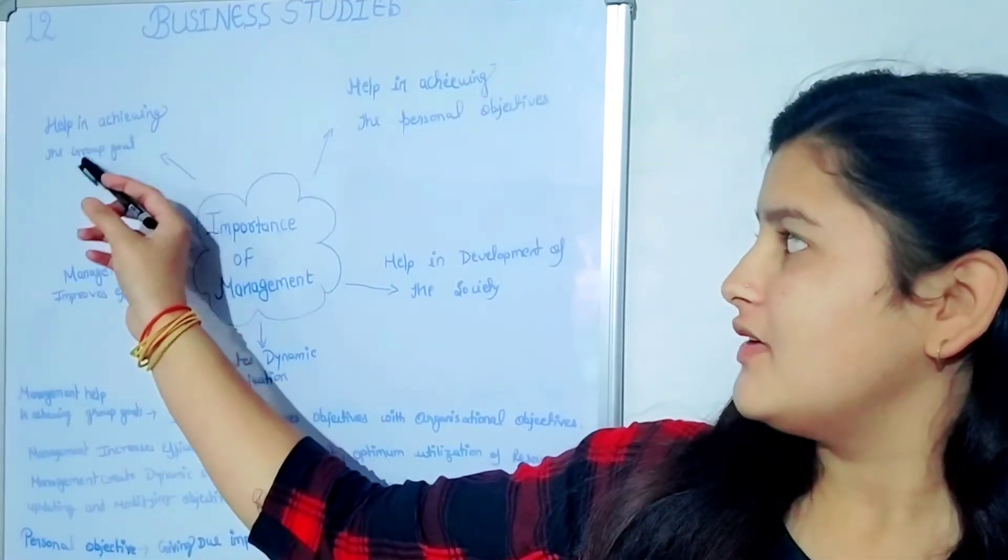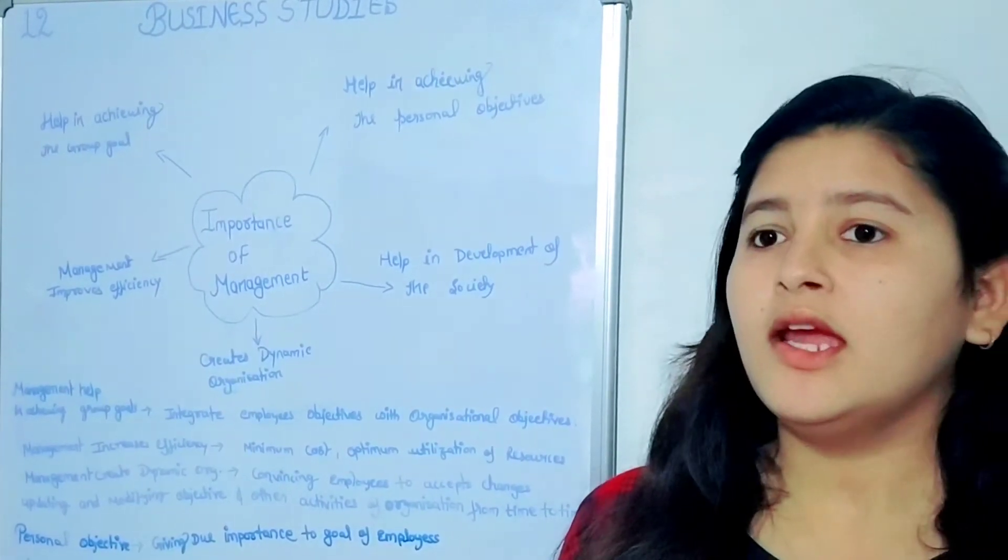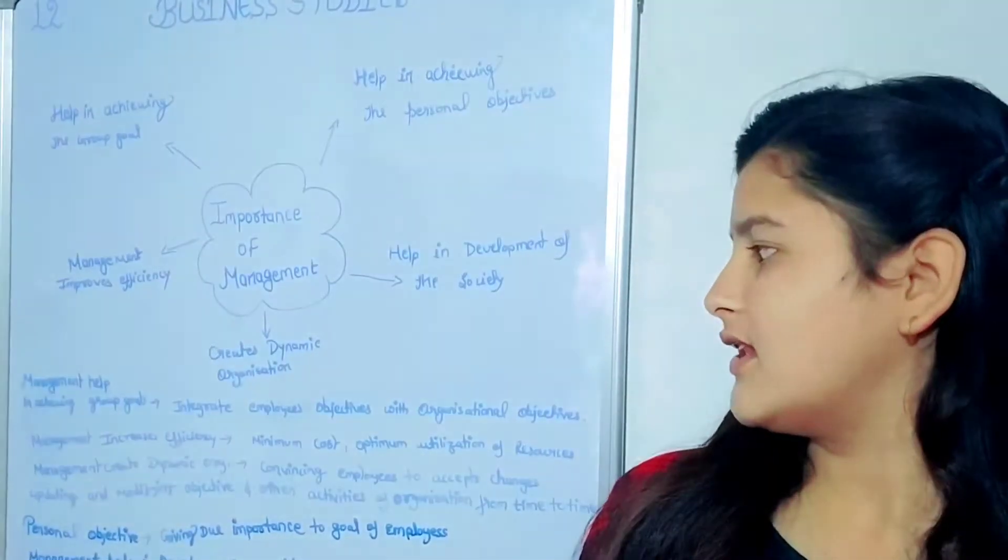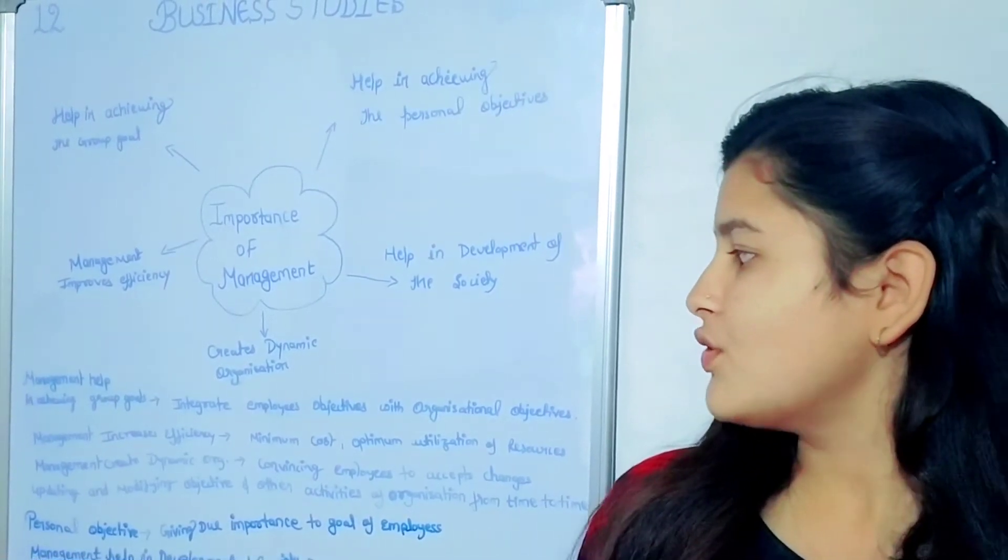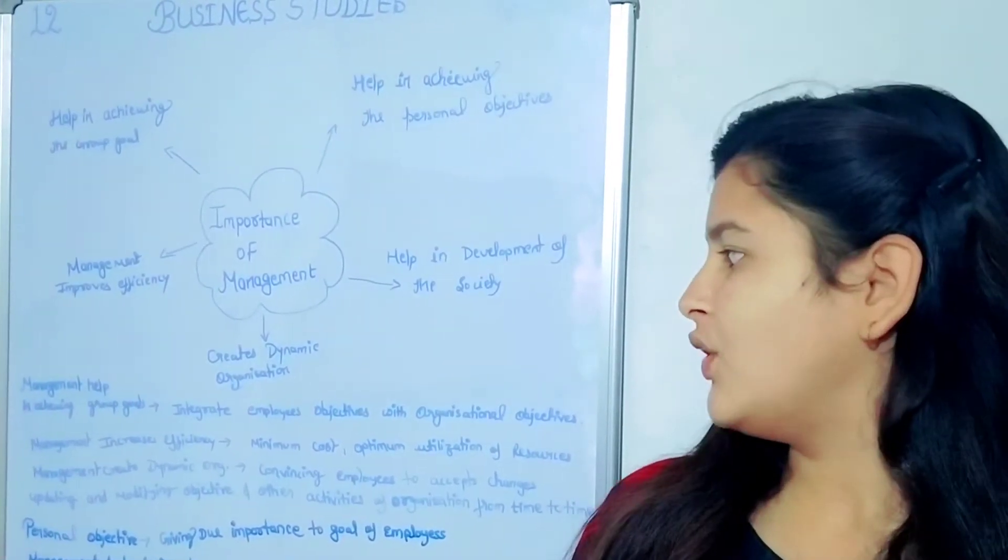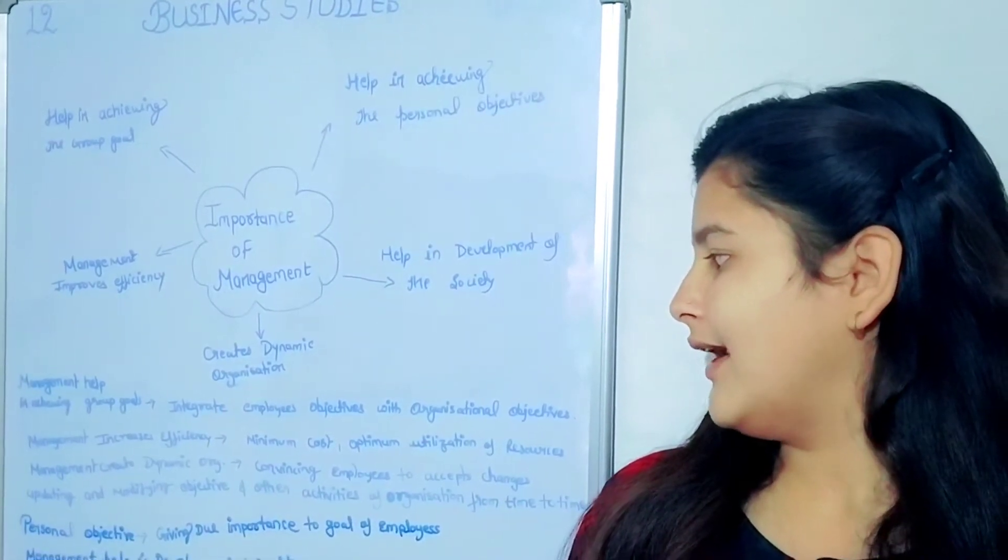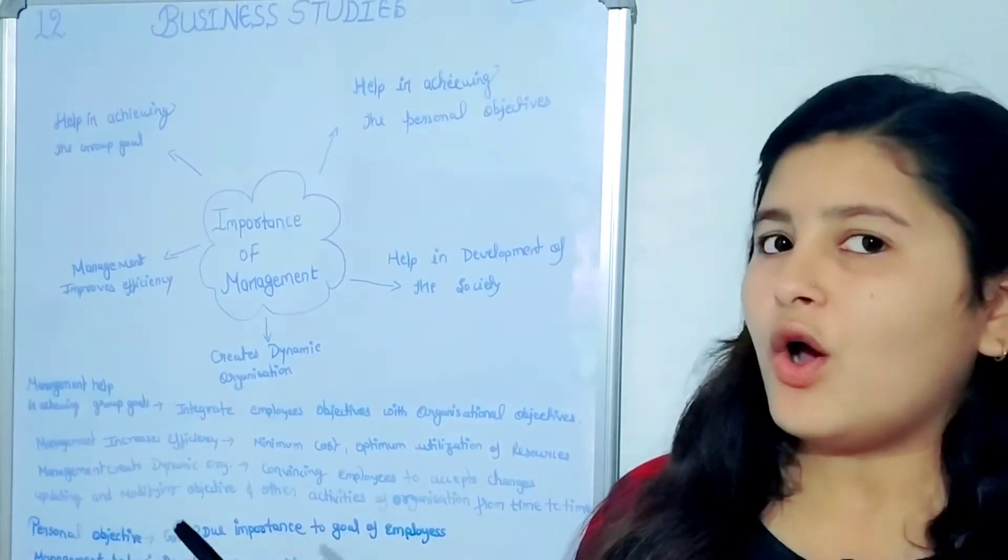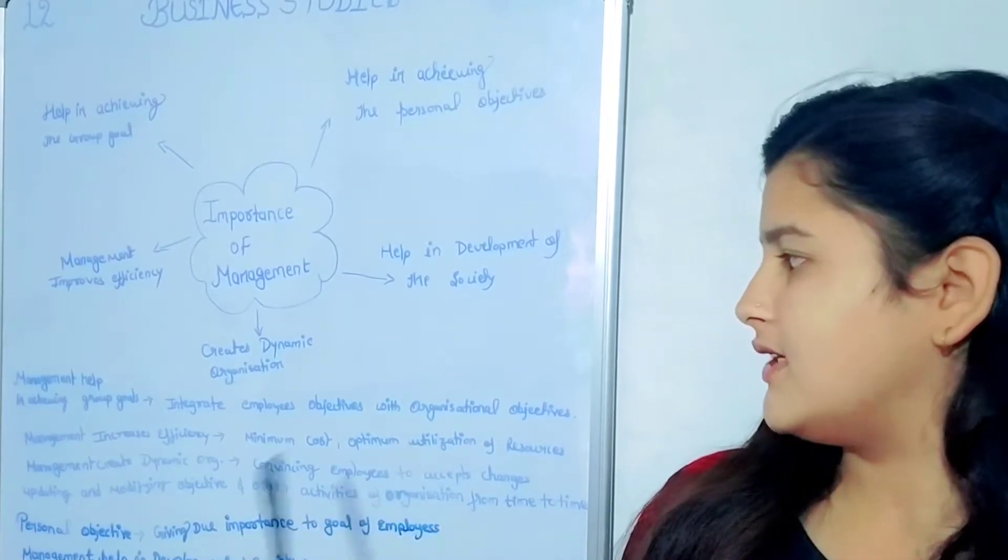Let's see help in achieving the group goal. How to help in achieving the group goal means the organization's objective, which is the group goal to be achieved. There are individual objectives and organizational objectives. The needs of individual employees who work separately, their efforts need to be integrated for the achievement of organizational goals. If the organizational goal is going to be achieved, it means the individual objectives are also going to be achieved.